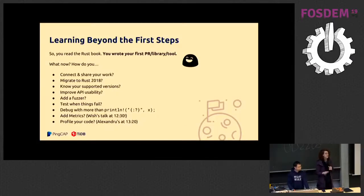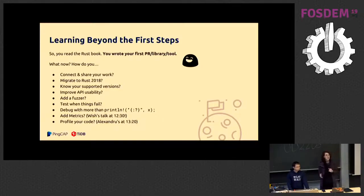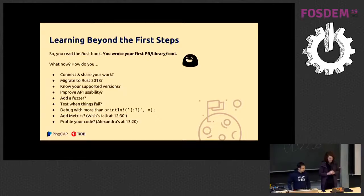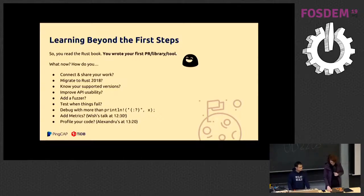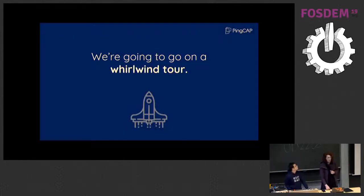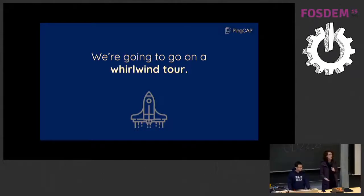You might have been at the point where you've read the Rust book, published your first crate, and you're pretty happy. But now you get the big questions: How do I share my work? How do I migrate to Rust 2018? How do I do all these other things I don't really want to do, because I just want to hack? We're going to go on a bit of a whirlwind tour. I'm not going to deep dive on anything — we can talk about it after outside.